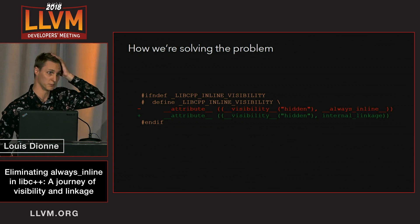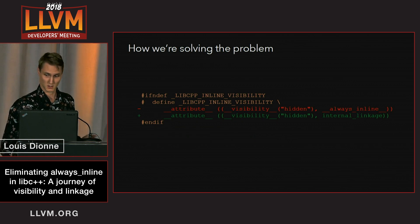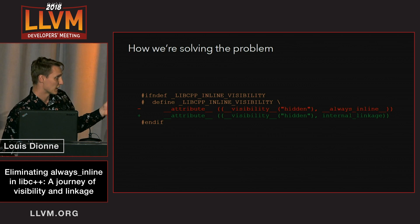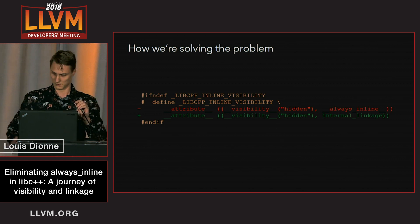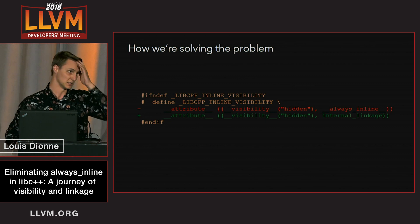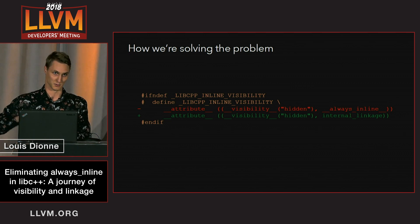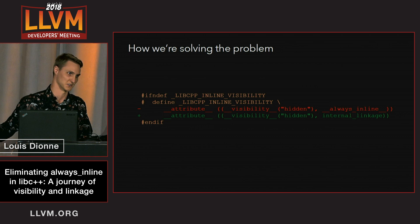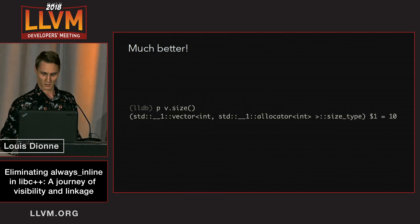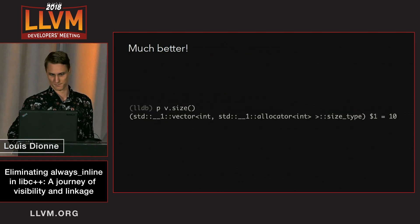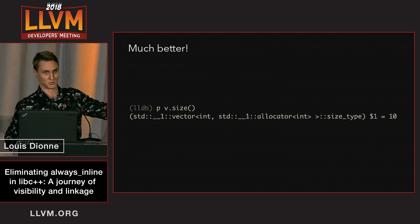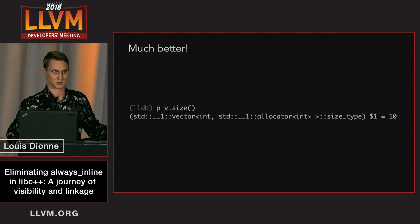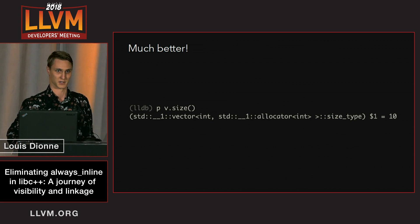We want to resolve that problem because always_inline is not fun. The way we're doing that is by using the Clang attribute called internal_linkage. Internal_linkage basically marks what it applies to as having internal linkage, which is essentially the C static keyword. With that fix, code stepping becomes much nicer and you can finally evaluate expressions in LLDB, which is good.